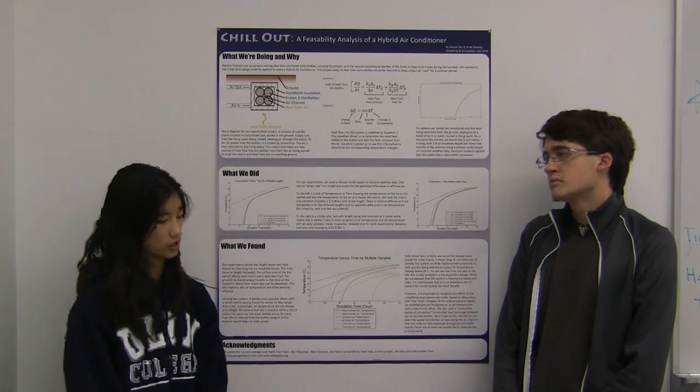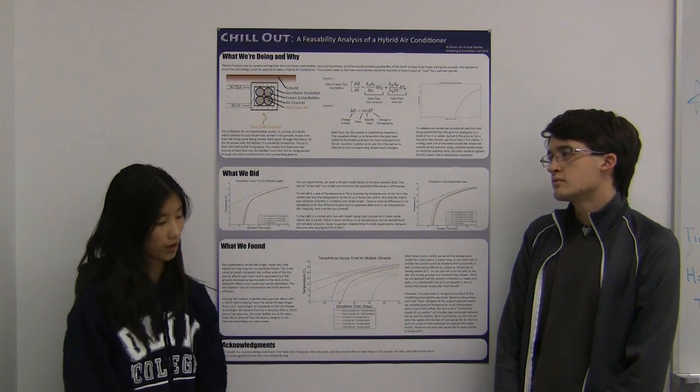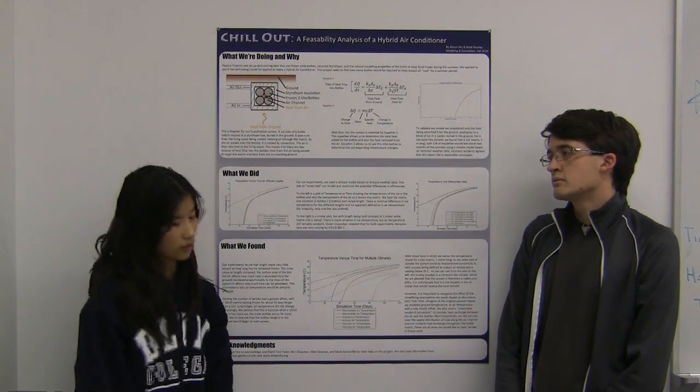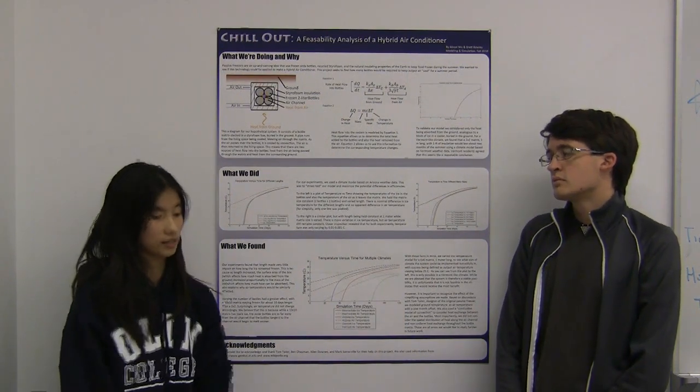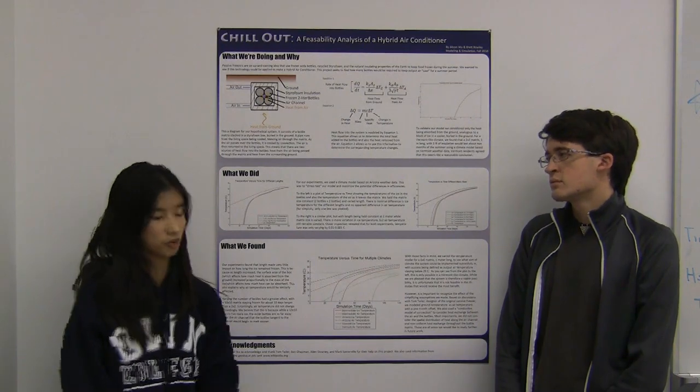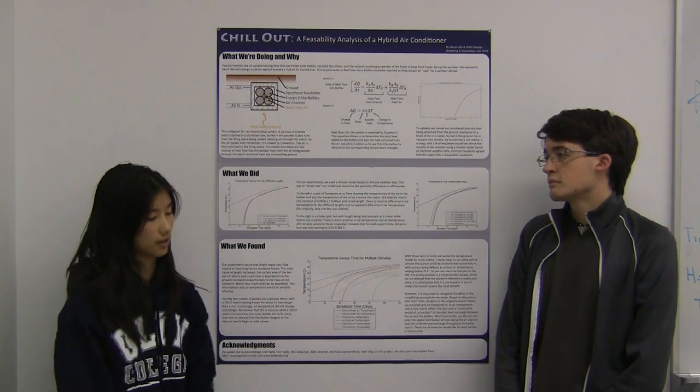The delta T refers to the difference in temperature between the ground or air and the matrix. Ground and air temperatures were represented by a sine curve with ground being equal to air temperature plus a one month offset.